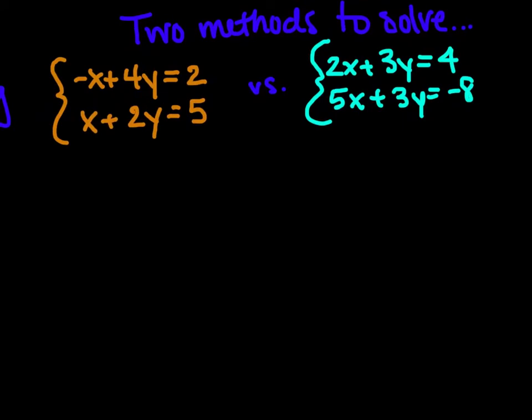Let's look at these two methods. The first system of equations: I have negative x plus 4y is equal to 2, and x plus 2y is equal to 5. I can see that my x's are exact opposites — I have a negative x and a positive x. Because of that, I can just add these two equations and that variable will disappear, becoming 0x. So my method for this one is addition.